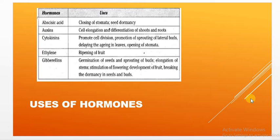Cytokinin is also a growth promoter hormone. It promotes cell division and the sprouting of lateral buds, which are branches. It delays aging in leaves, keeping them green for a longer time. It also helps in the opening of stomata. So opening of stomata is the responsibility of cytokinins, while closing is the responsibility of abscisic acid.